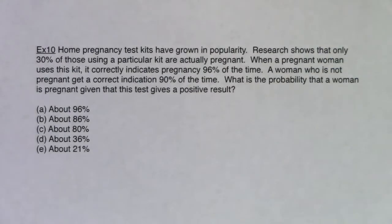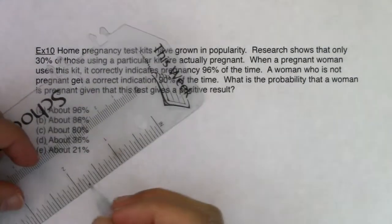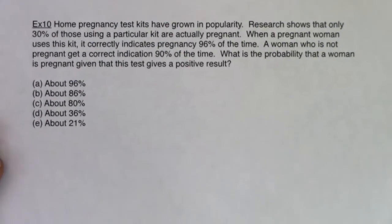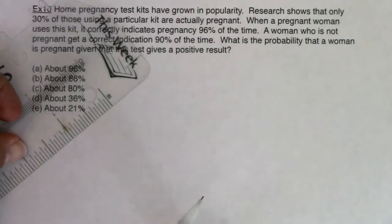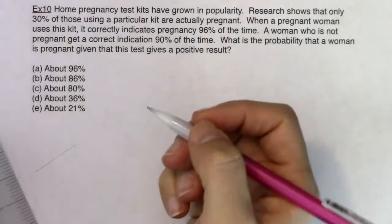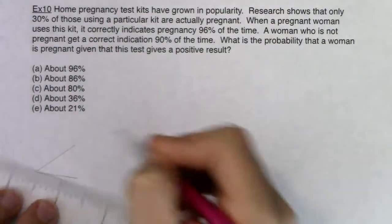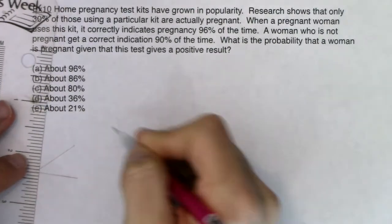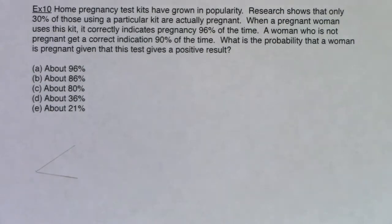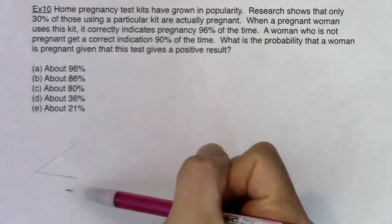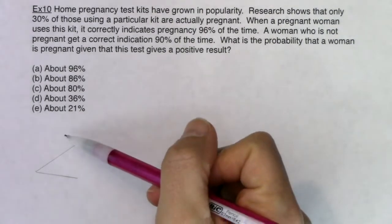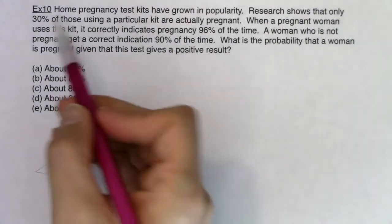You can have multiple branches on a tree diagram, but in this class I'm going to limit us to two-by-twos. So I'm always going to have one set of branches with two outcomes, and then another set of branches tacked on, giving us four possible outcomes. In terms of what event goes first — is it pregnant/not pregnant, or is it test positive/test negative? Examine the numbers you're given: you've got 30%, 96%, and 90%.